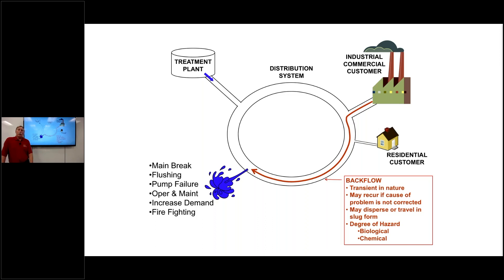Also, we find at times the hazard will flow in a slug form. It won't dilute. It'll be a slug moving through the distribution system. And a number of backflow incidents over the years have shown where this full strength hazard has actually surfaced at another point in the distribution system and caused problems.